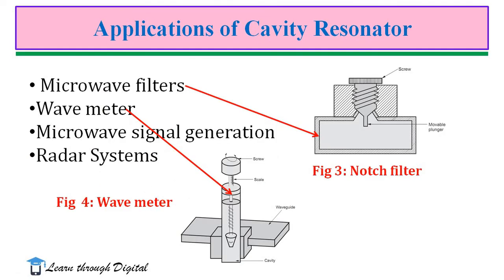Next, we discuss the applications of cavity resonators. Microwave resonators are tunable circuits used in microwave oscillators, amplifiers, frequency meters, and filters. The first application is microwave filters. This figure illustrates a notch filter with a cavity resonator. In a notch filter, the cavity dimensions are flexible and can be changed by a tuning screw movement. When the incoming signal frequency equals the resonant frequency, the energy stored in the cavity can be varied, causing it to act as a notch filter or bandpass filter.